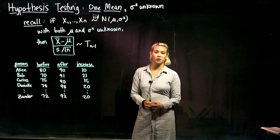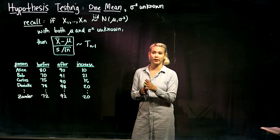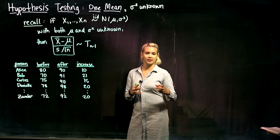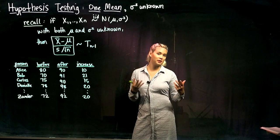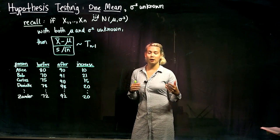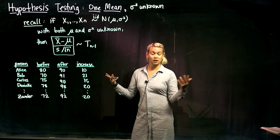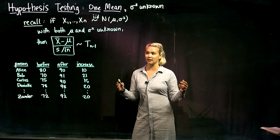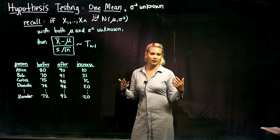In the previous videos we've been talking about having one variable, so maybe that one variable was the number of slices of pepperoni on a piece of pizza or something like that. In the real world it's not unusual to see some paired data, so like before and after or something like that.